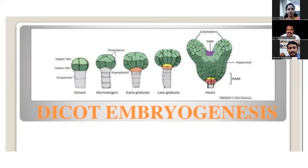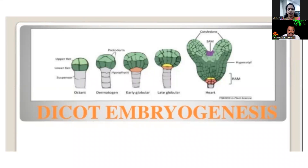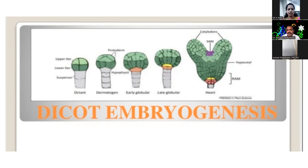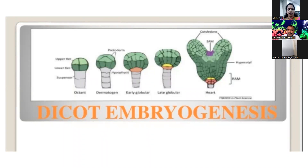The triploid endosperm is found in which plants — bryophyte, pteridophyte, gymnosperms, or angiosperms? From last class, the triploid endosperm is found in angiosperm plants. Also, double fertilization is a characteristic of angiosperms.